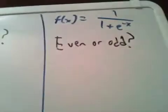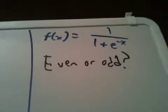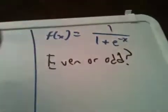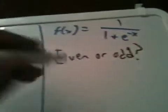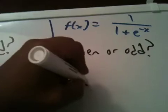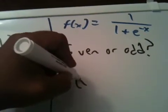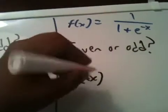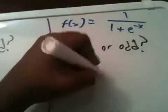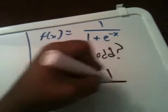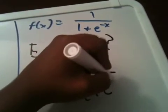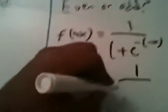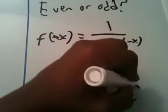The way we do that, we do f of minus x. But I would like to rewrite this, but I really can't. I'm just going to leave it like that. So let's see what I can do. Okay, that's going to be f of minus x, it's going to be equal to 1 over 1 plus e to the minus minus x. That's just going to be 1 over 1 plus e to the x.